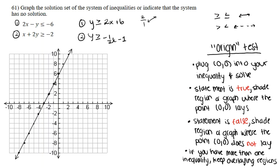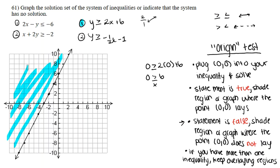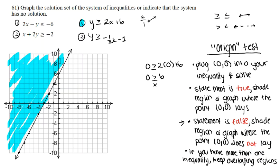Plugging (0, 0) into the first inequality gives us: 0 is greater than or equal to 2 times 0 plus 6, which simplifies to 0 ≥ 6. We know zero is not greater than six, so this is a false statement. That means we shade the entire region of the graph where (0, 0) does not lie — which is the upper-left region above the line.